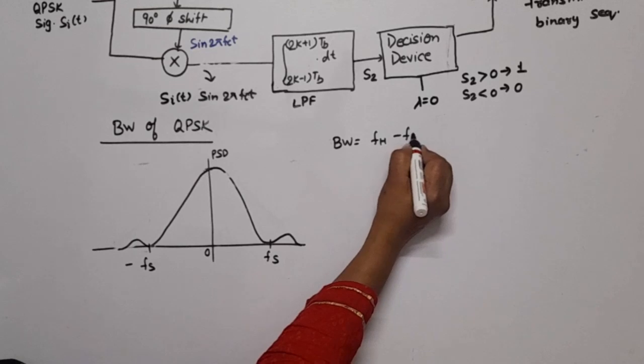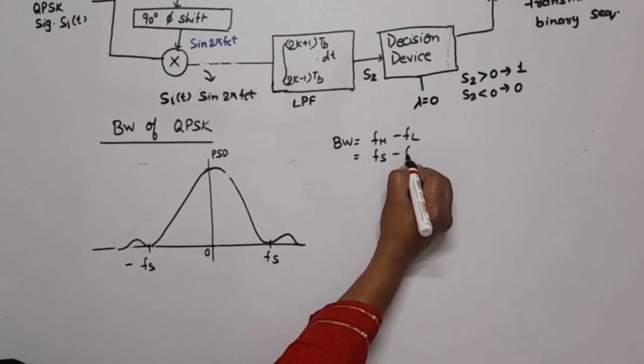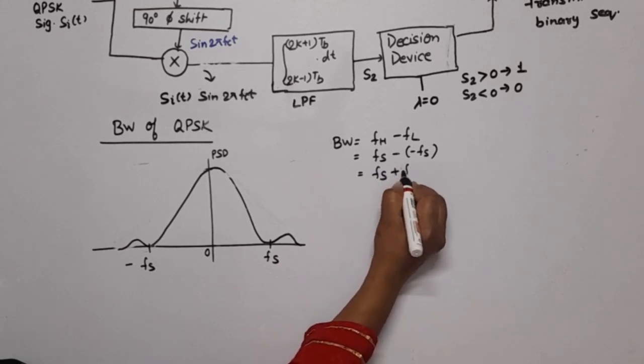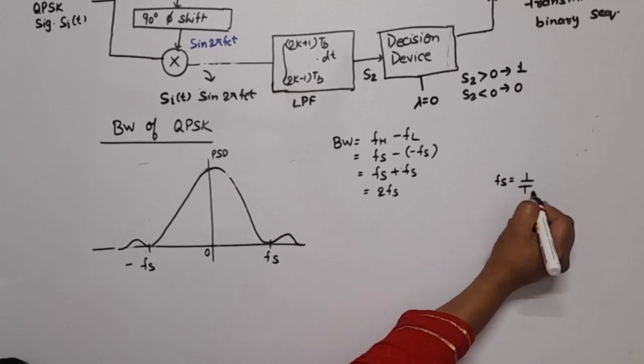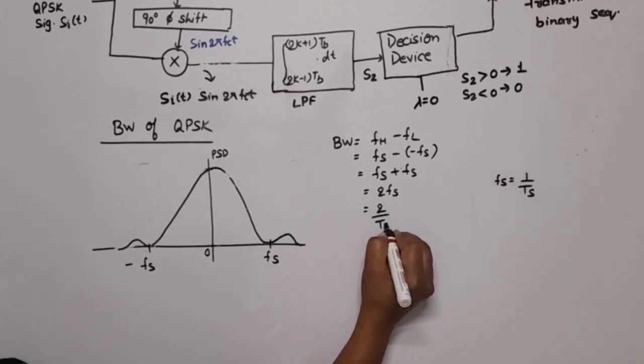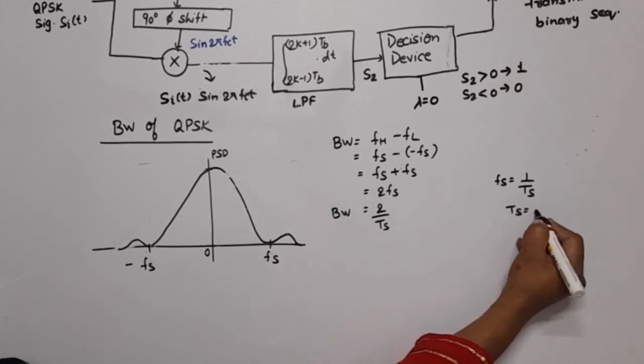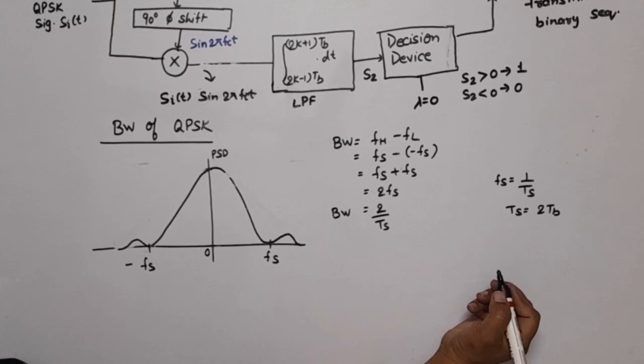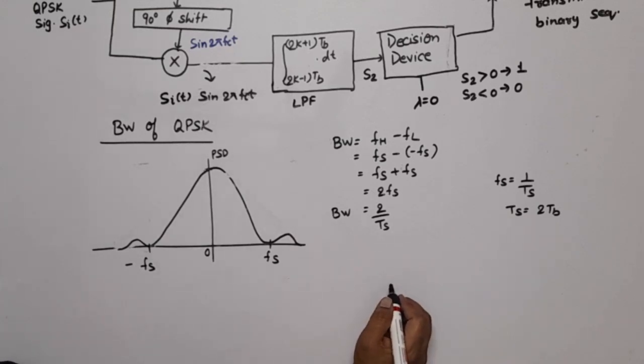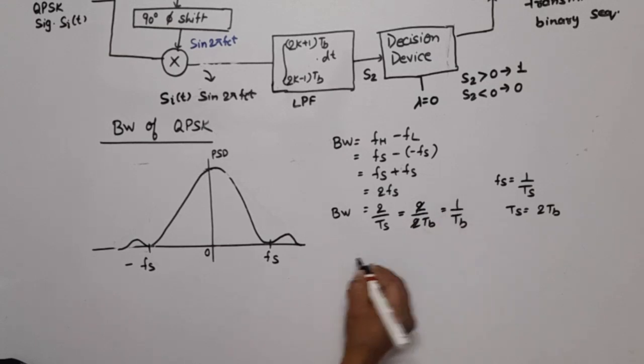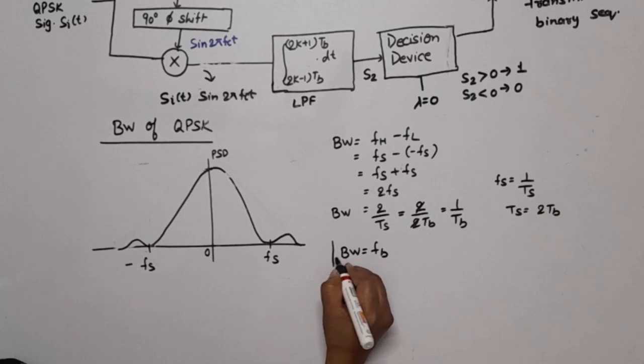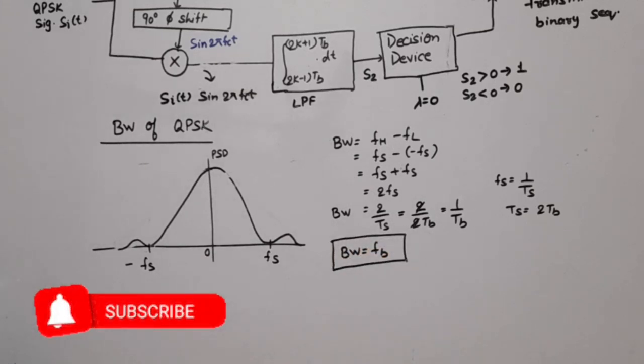Bandwidth is equal to fh minus fl. fh is fs and fl is minus fs, so this equals fs plus fs equals 2 fs. We know fs equals 1/ts, so bandwidth equals 2/ts. We know ts equals 2 tb because in QPSK, 2 bits are transmitted per symbol, so symbol duration equals 2 bit durations. So 2/2tb cancels to 1/tb, which can be written as fb. This means the bandwidth of QPSK is less than the bandwidth of BPSK. Thank you. If you have any doubts, please write in the comment section.